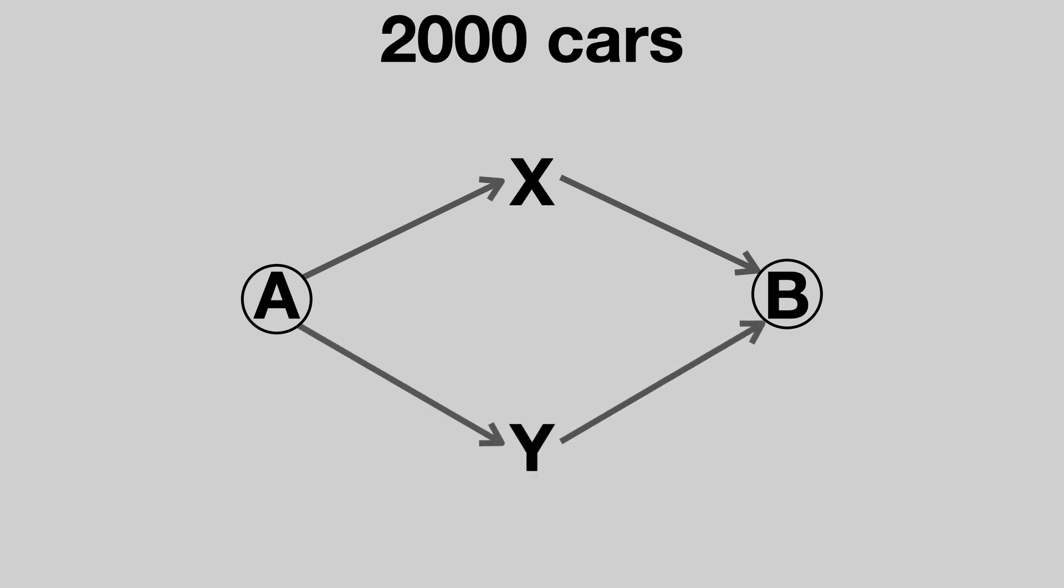Suppose that 2,000 people want to travel from point A to point B every day. There are two possible routes they can take. Route 1 goes via point X and route 2 goes via point Y.